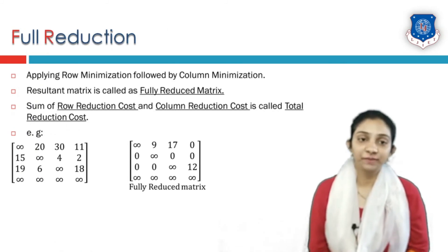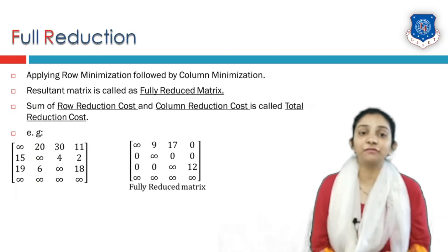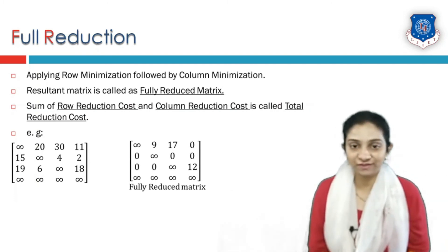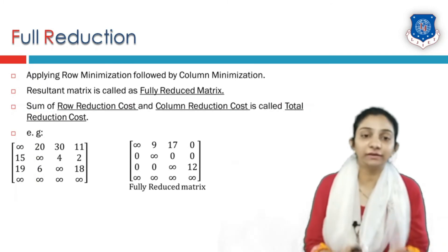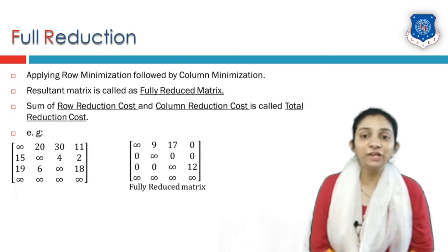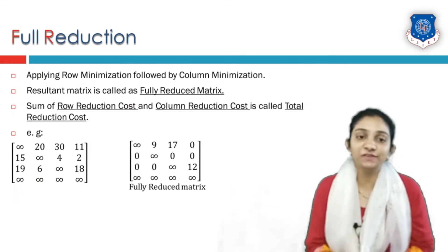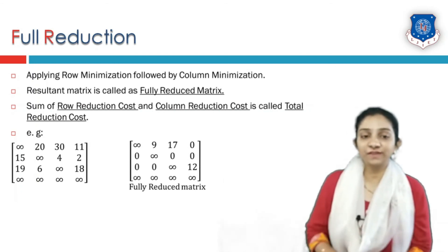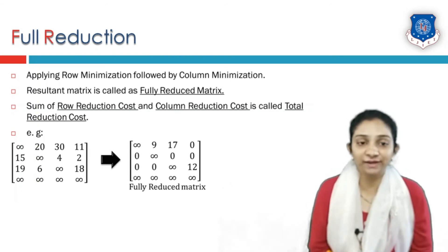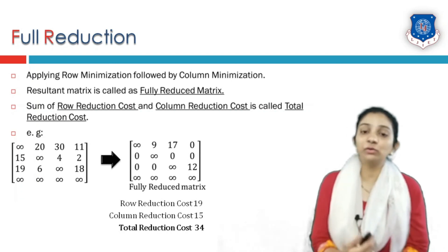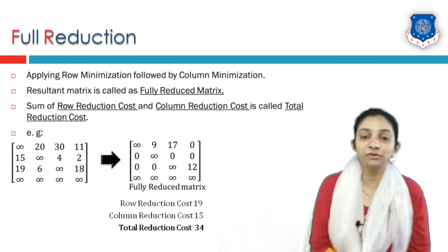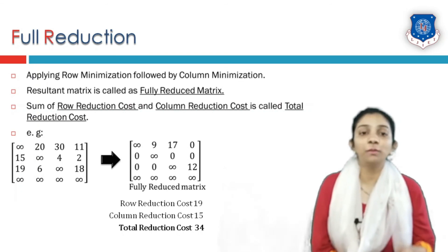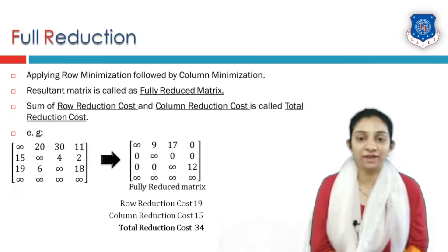Full reduction is obtained by performing row minimization followed by column minimization, and the resultant matrix is the fully reduced matrix. The total reduction cost of the fully reduced matrix equals the row reduction cost plus the column reduction cost. For our example, the column reduction cost is 15 and the row reduction cost is 19, so the total reduction cost is 34. Note that we must always perform row minimization first and then column minimization — the order of performing the minimization process does matter.